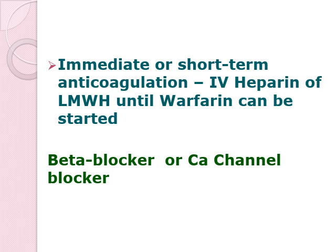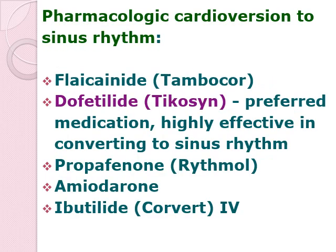Other than electrical cardioversion, you also have what is referred to as pharmacologic cardioversion. These medications could possibly convert your abnormal ECG to normal sinus rhythm. However, these medications should be given within 7 days upon the onset of AFib, because beyond 7 days they become less effective. Among these medications, dofetilide is a preferred medication because it is effective in converting to sinus rhythm. Other than that, ACE inhibitors, which are your antihypertensives, could also be used for the management of your atrial fibrillation.